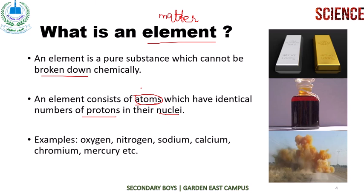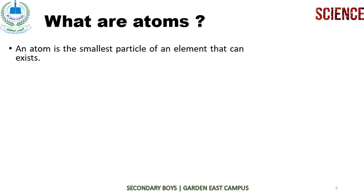Let's look at some examples: Oxygen, Nitrogen, Sodium, Calcium, Chromium, Mercury, and many more. There are around or more than 100 elements which have been found till today. So then we talk about atoms.